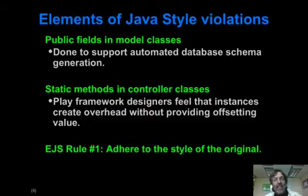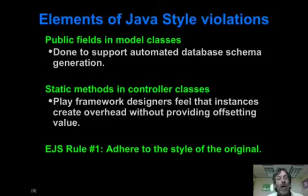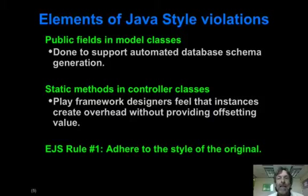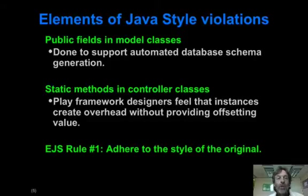There are some places where you'll say to yourself, 'this is just wrong.' For example, when you're building model classes, the recommended approach is to make your fields or instance variables public. And that's something that if you've been a long-time Java developer, you never want — you want to keep them private. It turns out that in Play, for model classes, there are reasons why they want them to be public, having to do with the annotation framework for creating the underlying relational database schemas. So in Play we're going to go along with public fields for model classes, even though Java style says this is not appropriate in general.